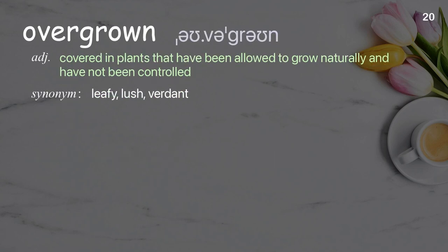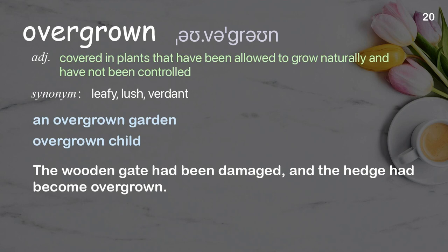Overgrown: Covered in plants that have been allowed to grow naturally and have not been controlled. Examples: An overgrown garden. Overgrown child. The wooden gate had been damaged and the hedge had become overgrown.